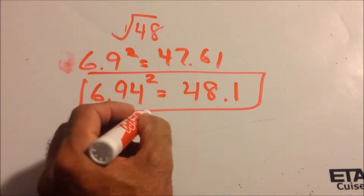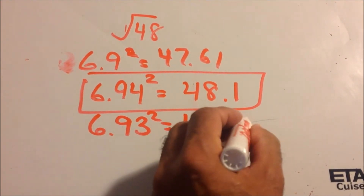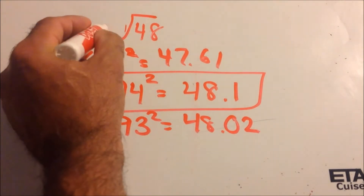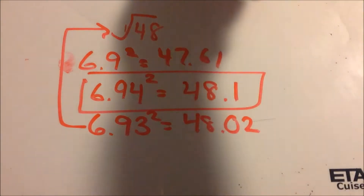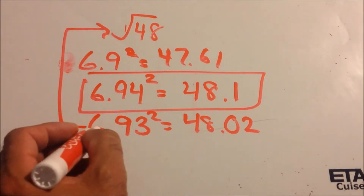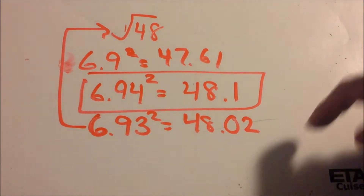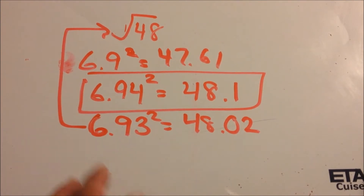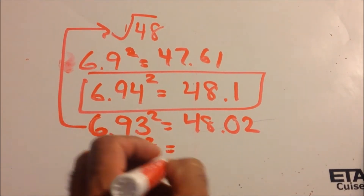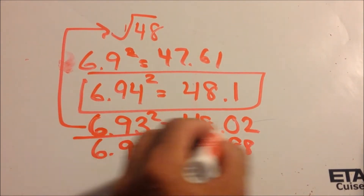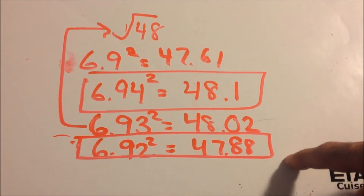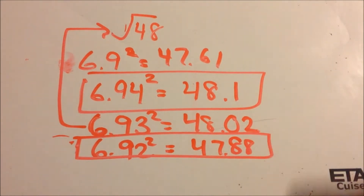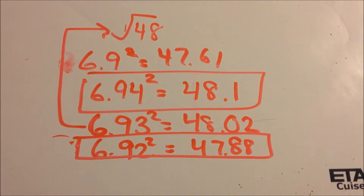What if we did 6.93? We get 48.2 — so 6.93 is very close to the square root of 48. If we needed to do a measurement, we'd say 6.93 is the square root of 48; it's off by about two hundredths. And 6.92 squared gives 47.88 on your calculator — that's the closest without going over. You can even go to the thousandths place, but we won't do that in this class.